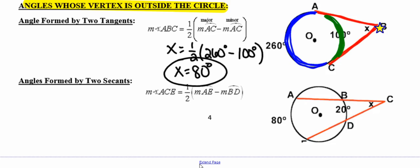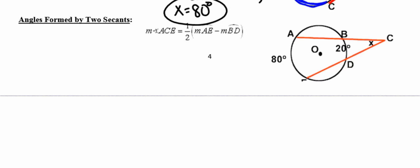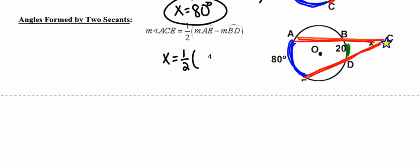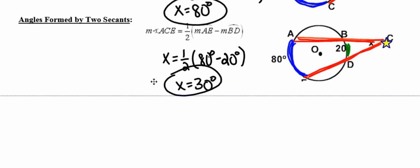Any time you have an angle formed by two secants, again look for the location of the vertex — it's outside the circle. The degree measure of the angle is half the difference of the two intercepted arcs. The first arc exists between points A and E; the second arc is the green one between points B and D. With the vertex at C outside the circle, the degree measure equals half the difference: the blue arc is 80, the green arc is 20, so 80 minus 20 is 60, and half of 60 means the angle equals 30 degrees.